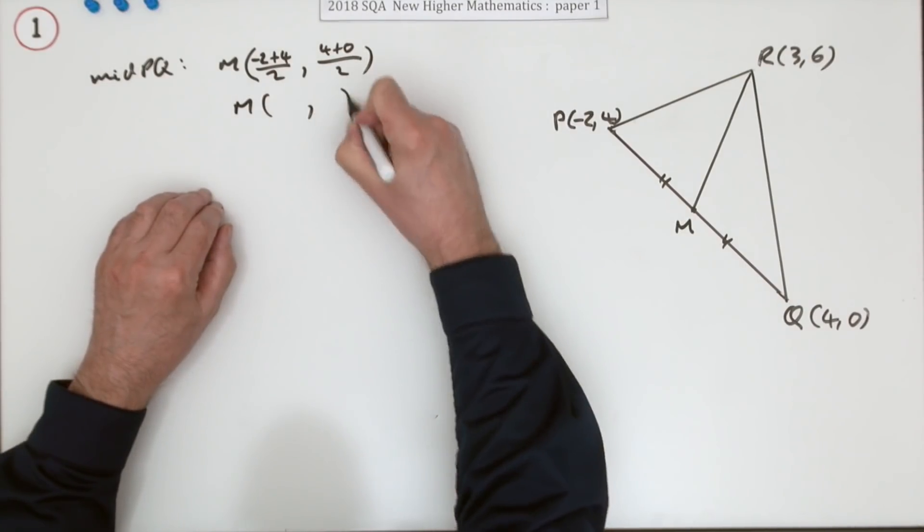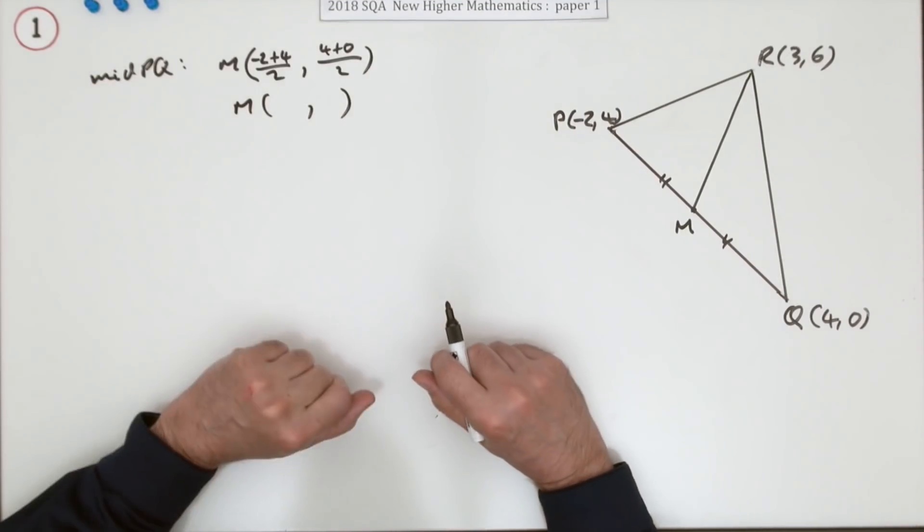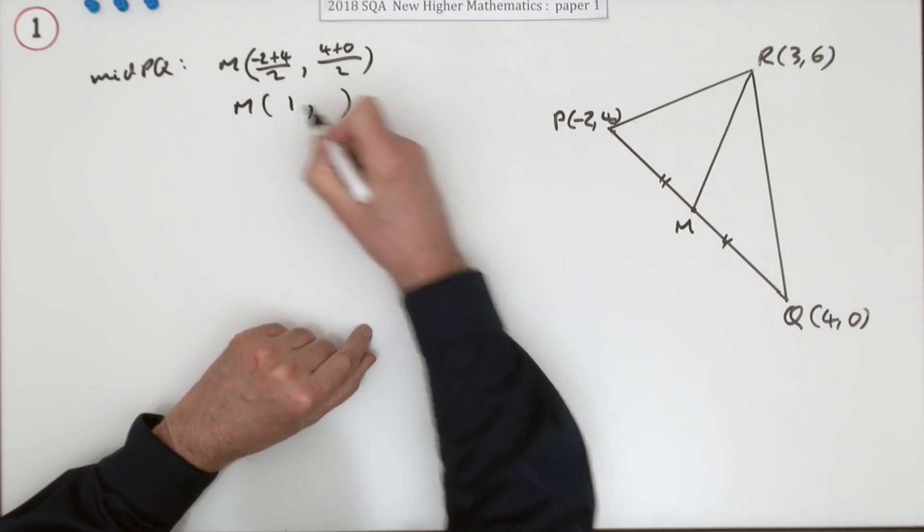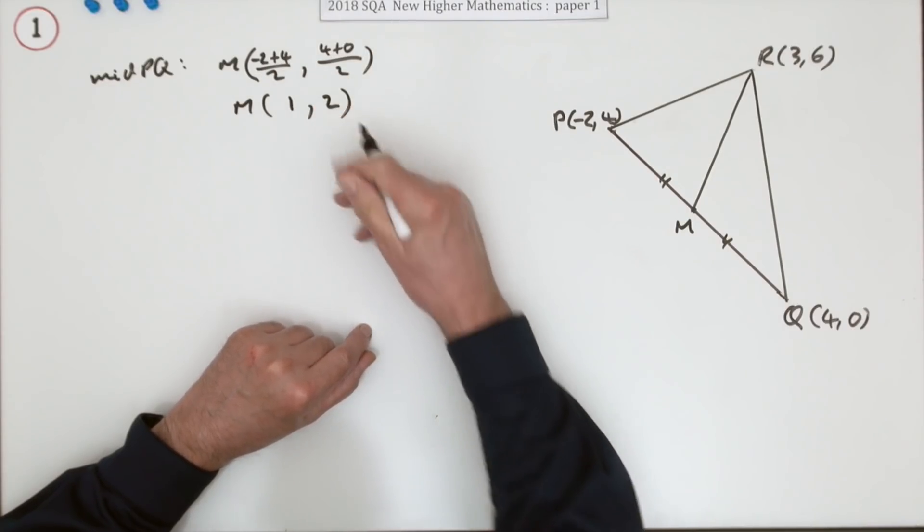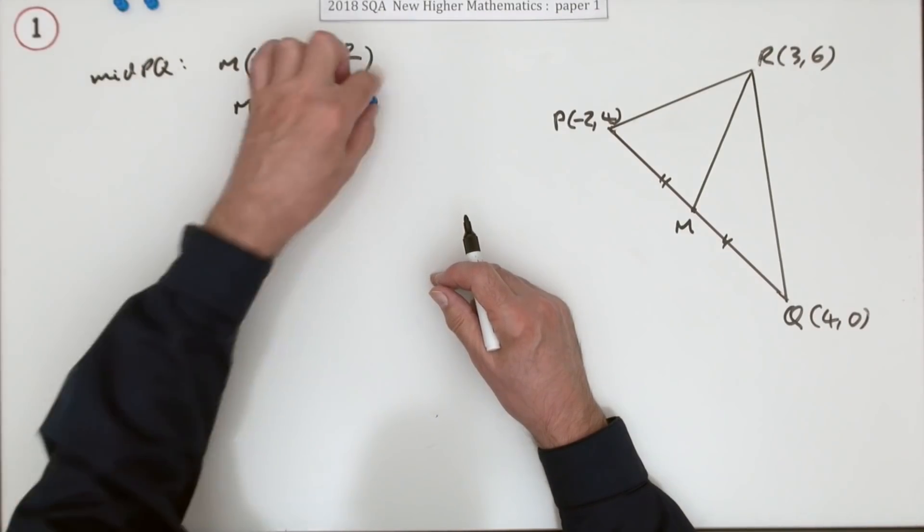Do that if you like, or just state it, because there's only the one mark for this. Well, that comes to 2 divided by 2 is 1. That's 4 divided by 2 is 2. So stating the midpoint is 1, 2 gets the first mark.